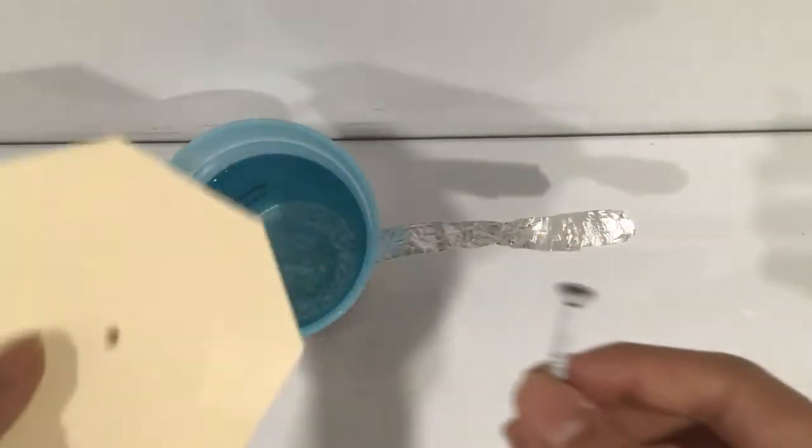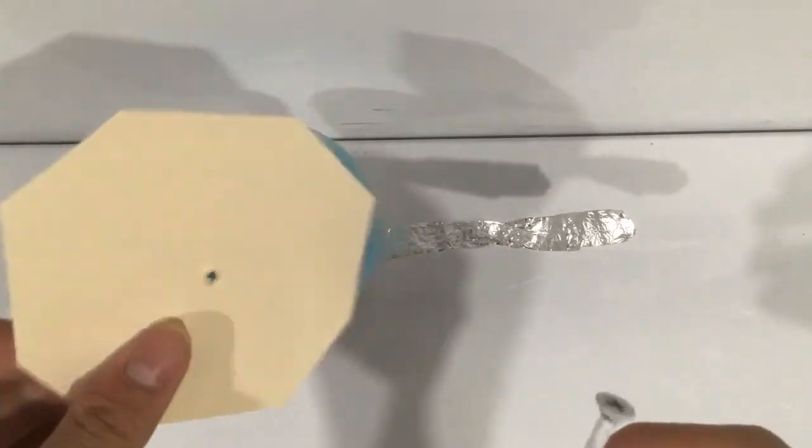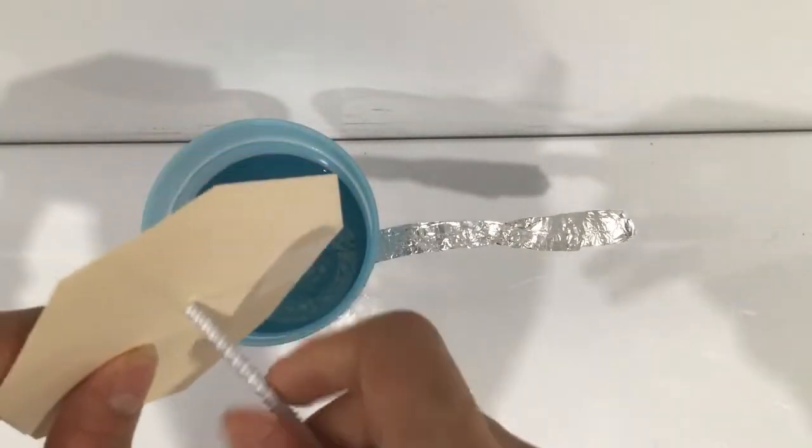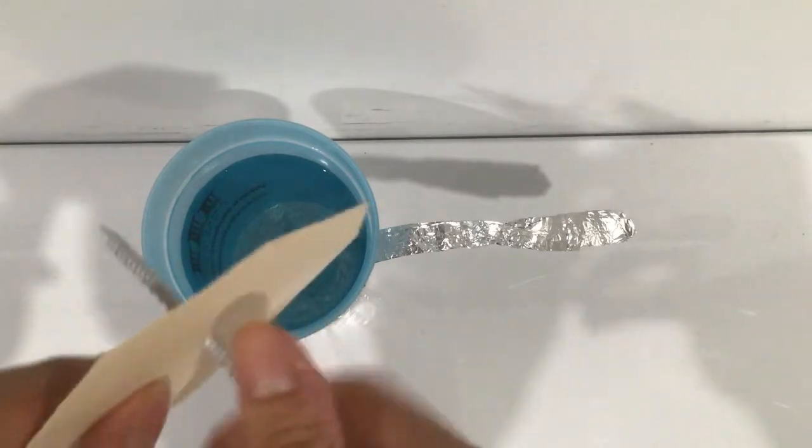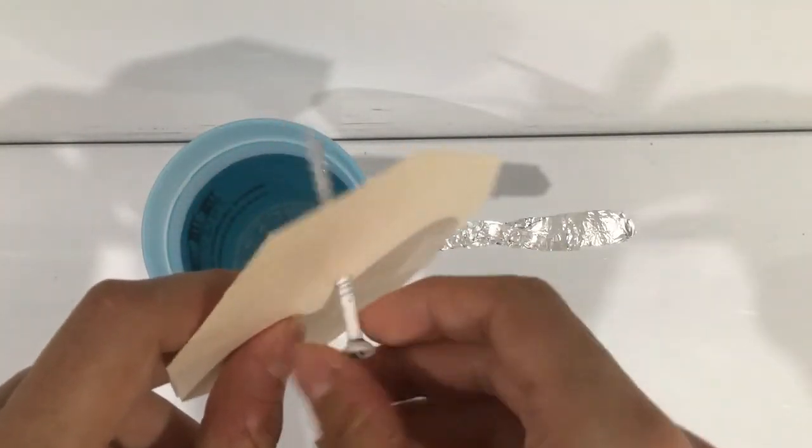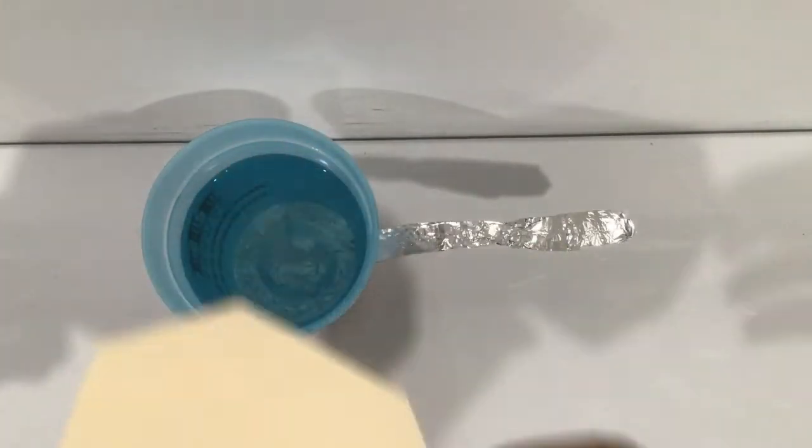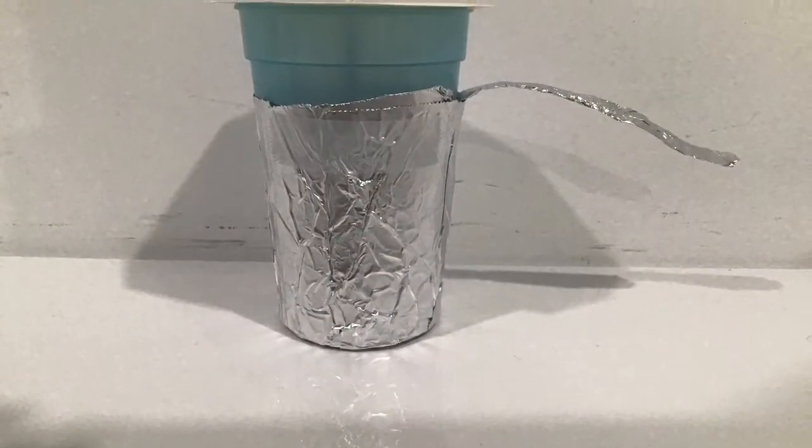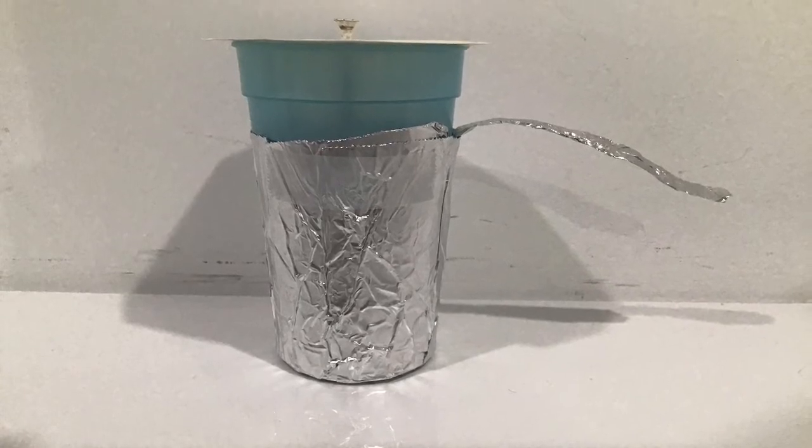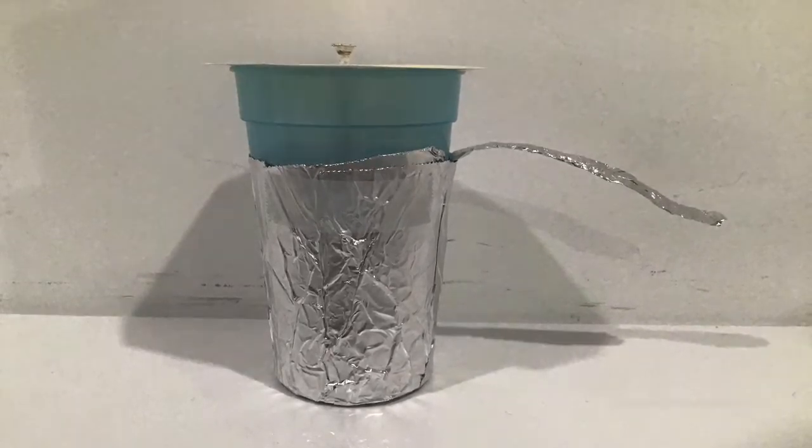Taking your nail or screw and the small plate of paper, place the screw or nail in the middle of the plate of paper and rest atop the cup. Make sure that the nail is touching the water within the cup and fasten the little plate to the container.